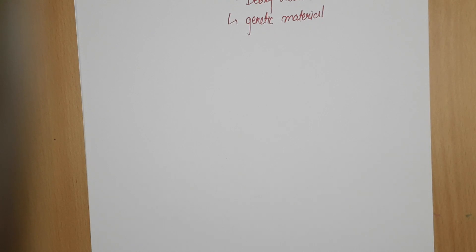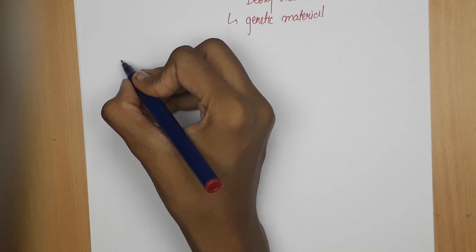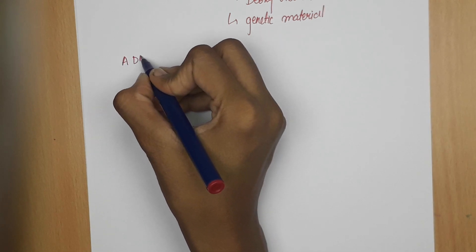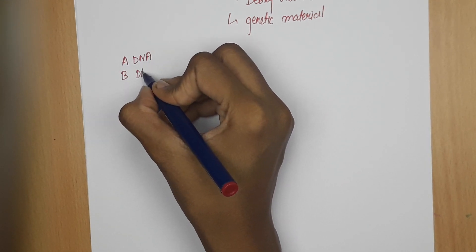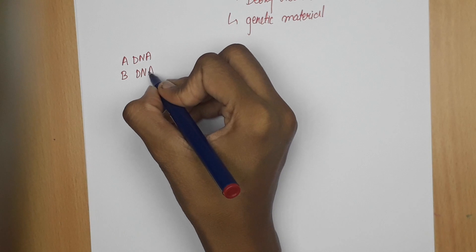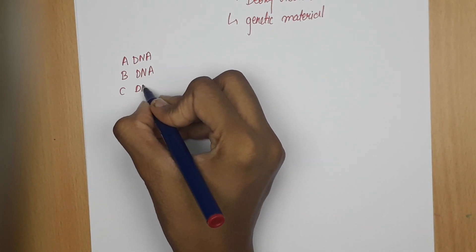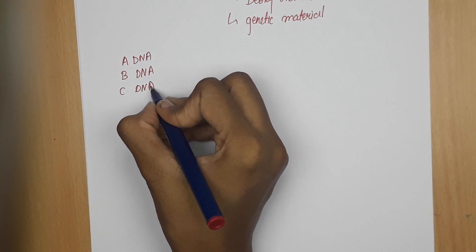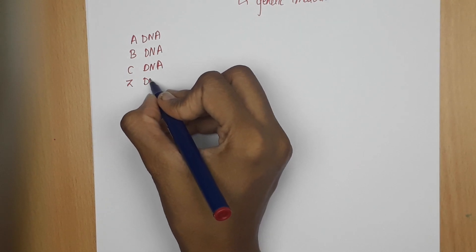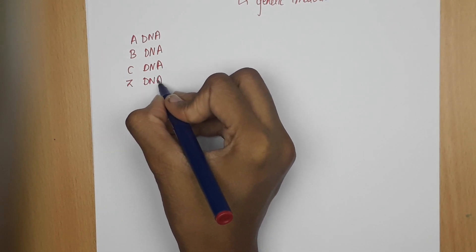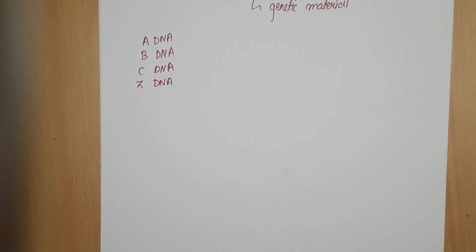The most widely studied forms of DNA are A-DNA, B-DNA, C-DNA, and Z-DNA. So let's start with A-DNA.